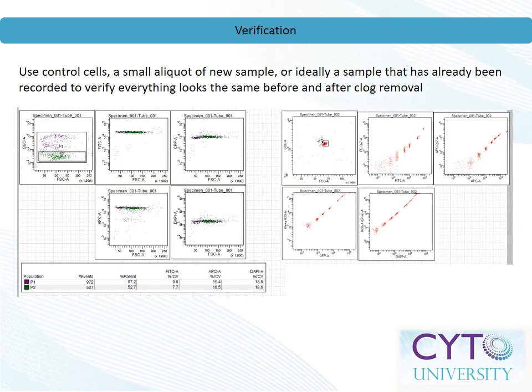As with any assay, reproducibility is key. This too is true for procedures as unglamorous as clog removal. It is important to verify that the instrument has not changed in any way as a result of your intervention. Ideally, you can rerun a sample that was successfully run before the clog occurred, but in the absence of such a sample, control cells such as glutaraldehyde-fixed chicken red blood cells, leftover compensation control samples, or even quality control beads can be used to verify the instrument's performance. In a pinch, you might elect to run an aliquot of a new sample to verify that the clog has indeed been removed and your instrument is performing as expected.